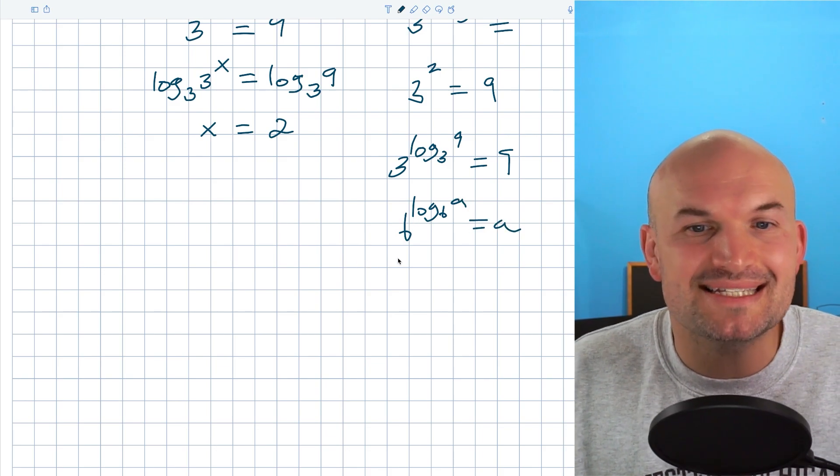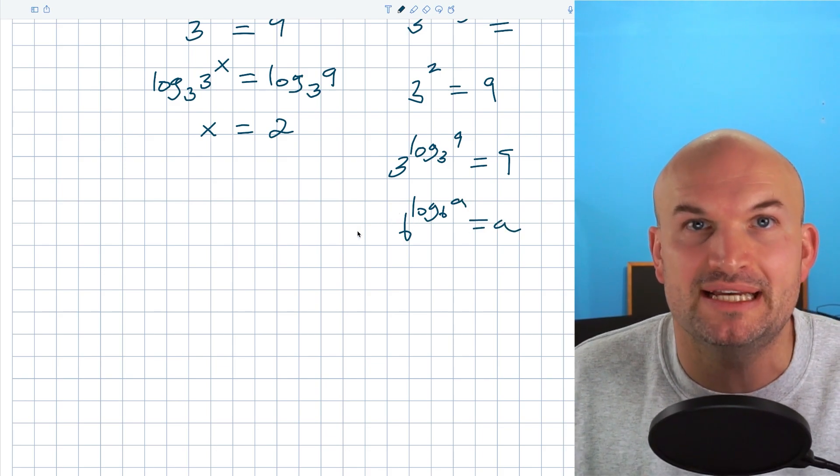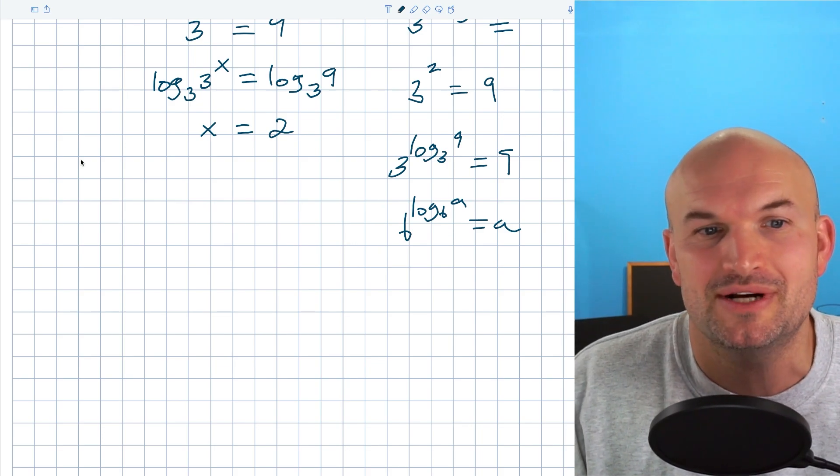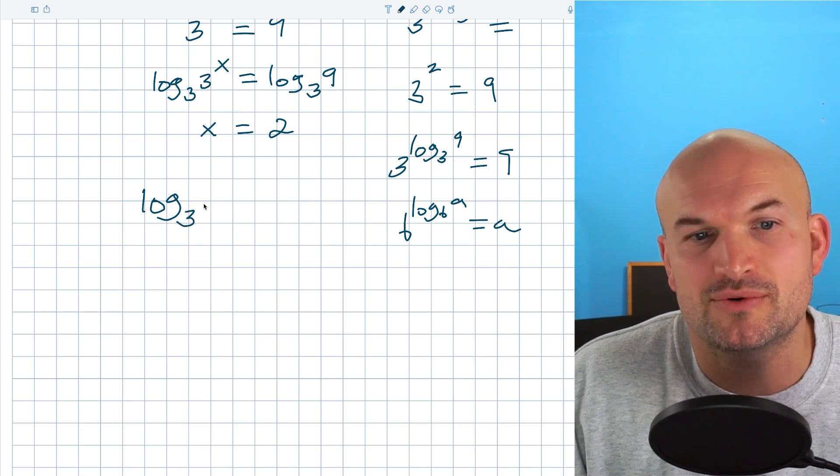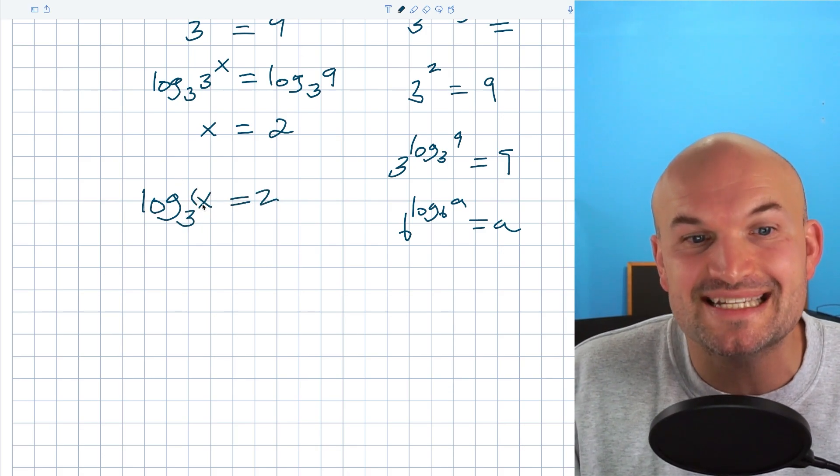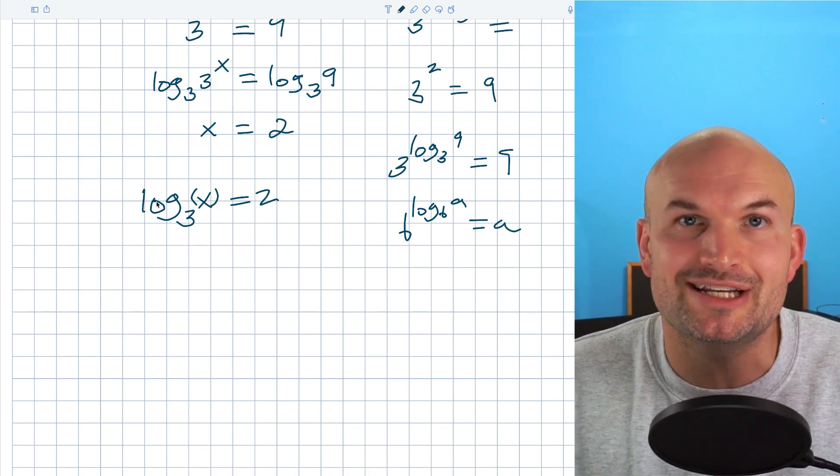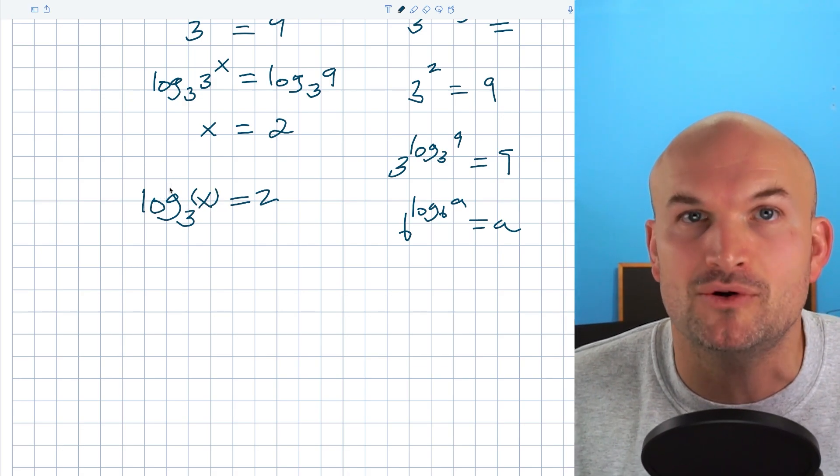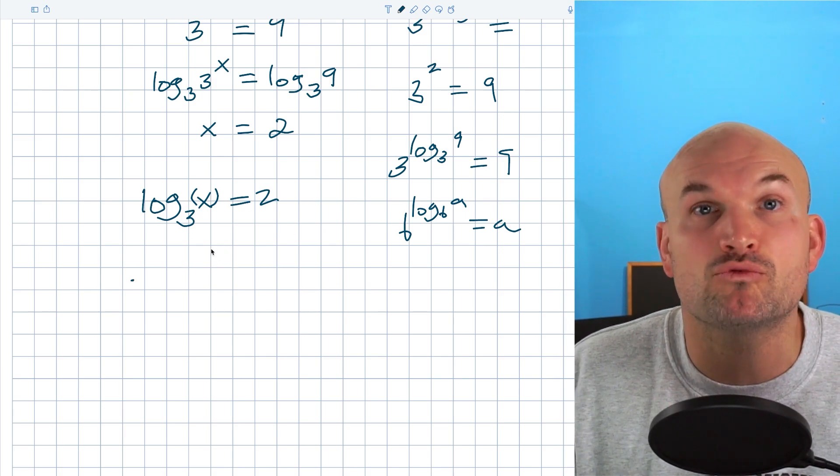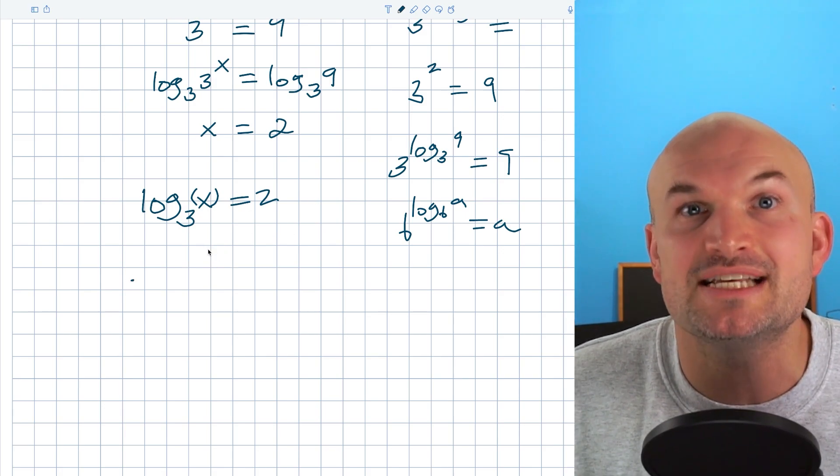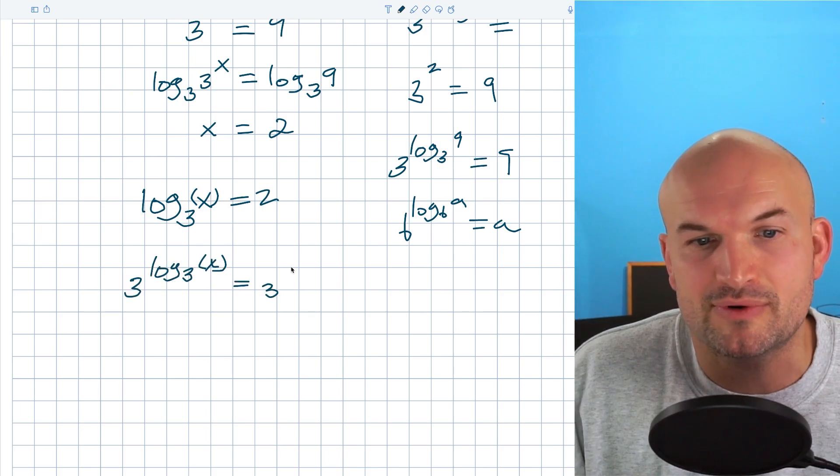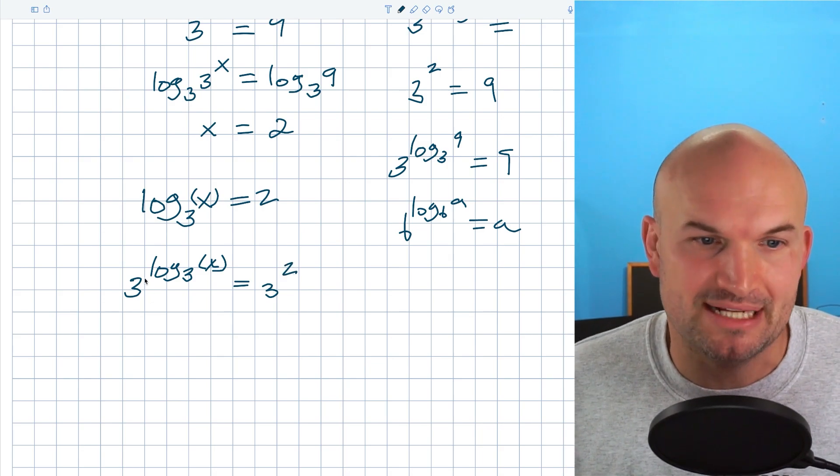Now, why is this important or how can this be useful? Let's go back to a basic example and pretend we don't know what the answer is. So if I had log base 3 of x equals 2, if I wanted to solve for x, right now x is inside of the logarithm. So what we're going to do is we're going to exponentiate both sides. And what that basically means is we're going to take both expressions and raise them as powers with a base 3. So we can say 3 raised to the log base 3 of x equals 3 squared. That's what exponentiate means.